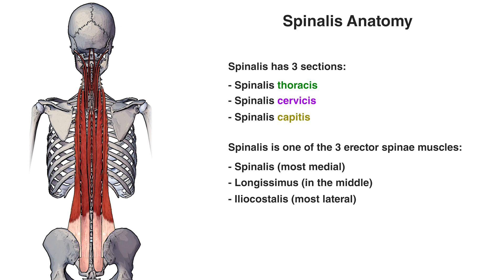All of the erector spinae muscles each have their individual three sections as well, much like the spinalis does. So that's the reason why it looks like there are quite a lot of muscles here — it's actually three individual muscles with their own three sections, just like the spinalis. If you'd like to learn more about any of the other erector spinae muscles, I'll put links in the description box below so you can go and see my videos on those as well.